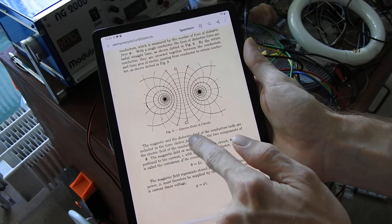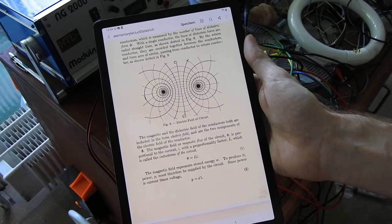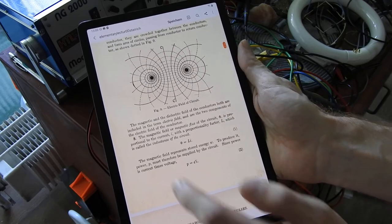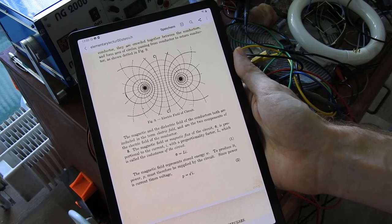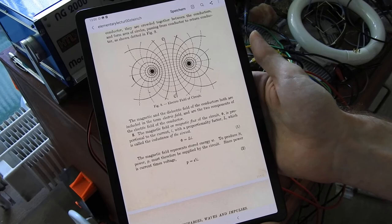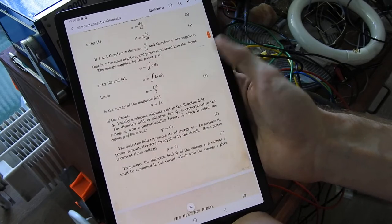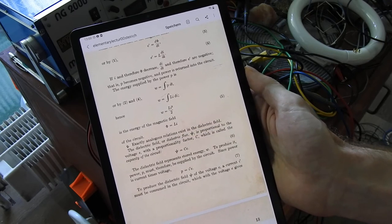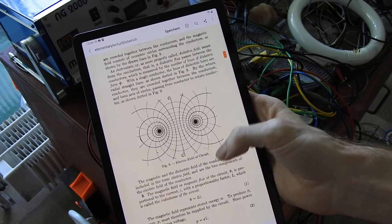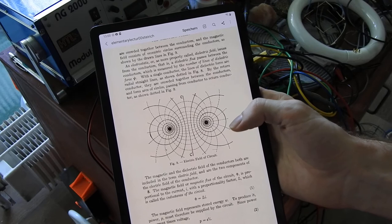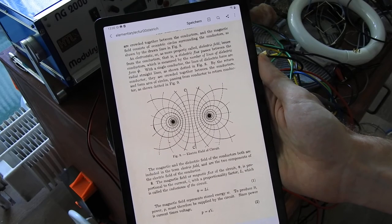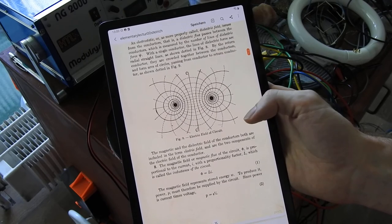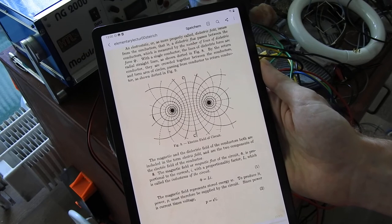It also says it here, the magnetic and the dielectric field of the conductors both are included in the term electric field and are the two components of the electric field of the conductor. And he continues to say at point eight, the magnetic field or magnetic flux of the circuit is proportional to the current or the amperes that we have in our circuit. And in point nine, he says exactly analogous relations exist in the dielectric field. The dielectric field or the dielectric flux is proportional to the voltage. So we can see that the dielectric field or the electricity is directly proportional to voltage and the magnetic field is directly proportional to our current or amperes. And these two field types together make the electric field.